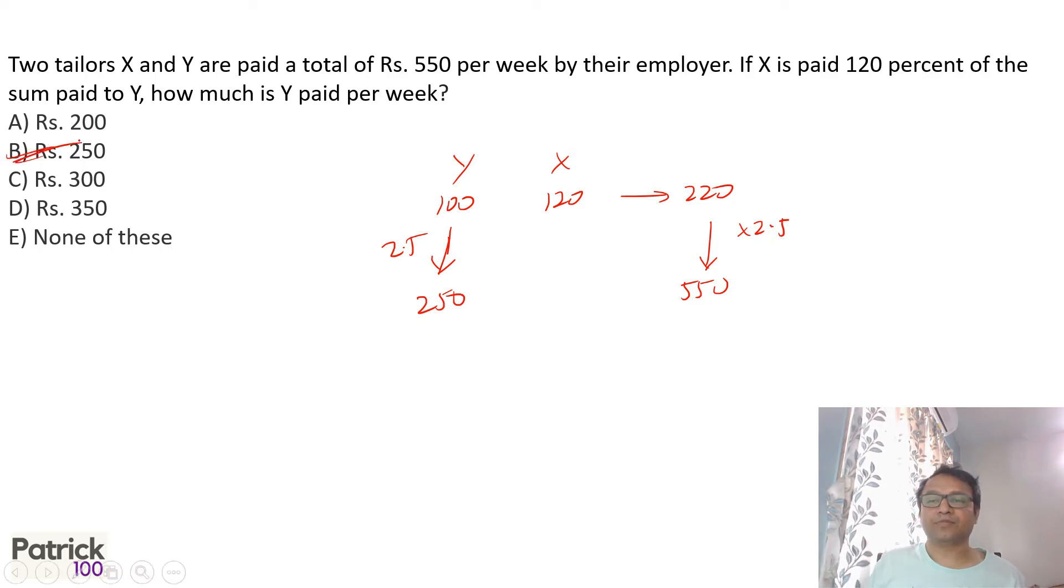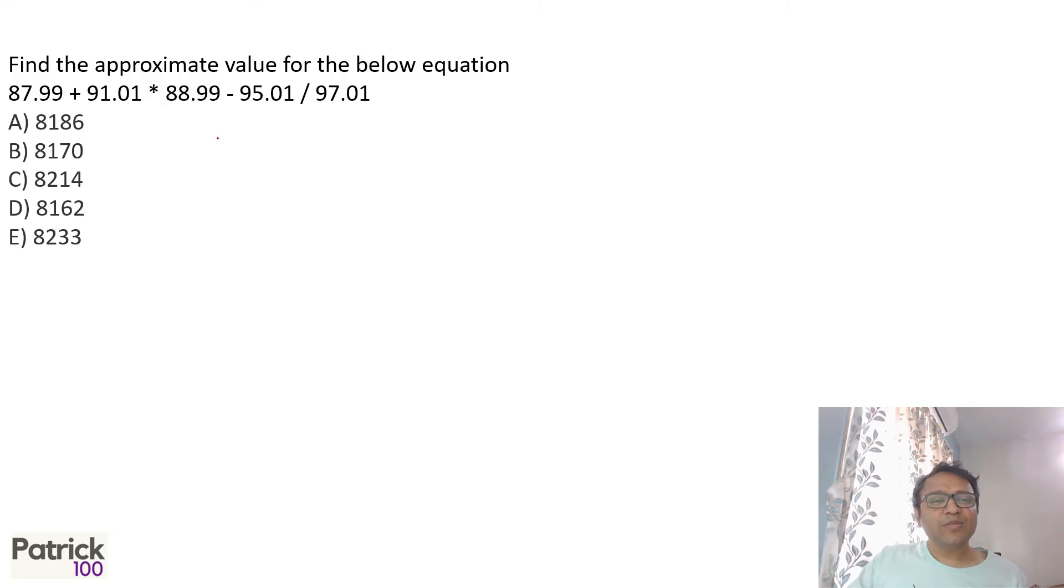Approximation. So if I approximate, I can take this as 91 into 89. I will take 91.01 as 91 and 88.99 as 89. This is nothing but 90 plus 1 into 90 minus 1, which is nothing but 90 square minus 1 square, which comes to 8100 minus 1, 8099.